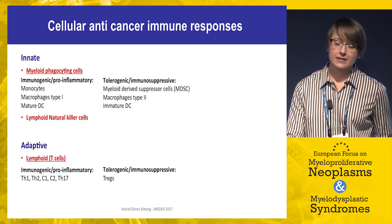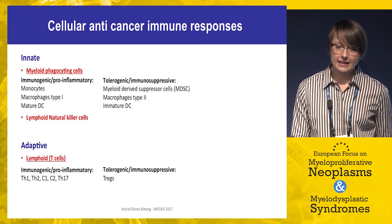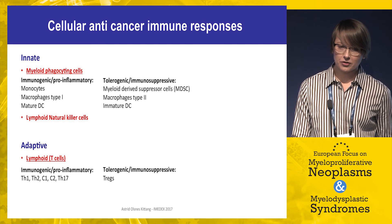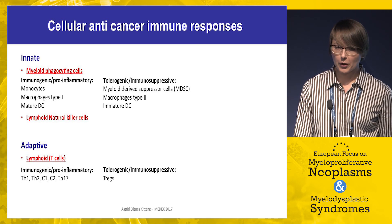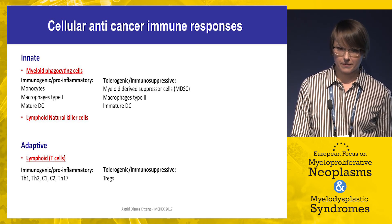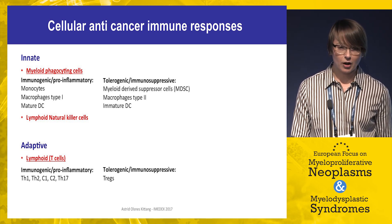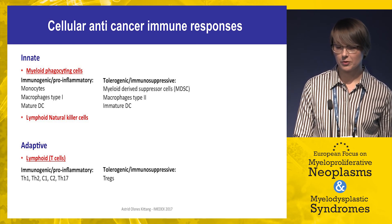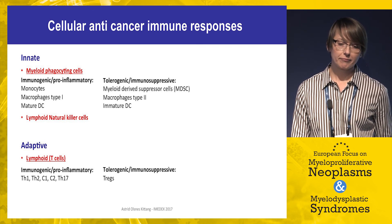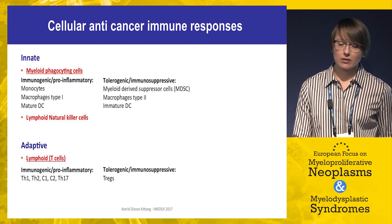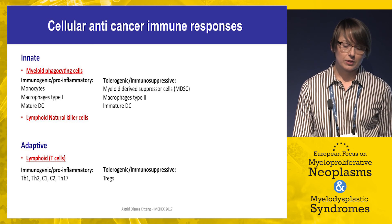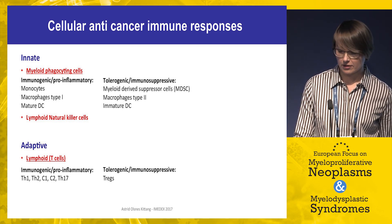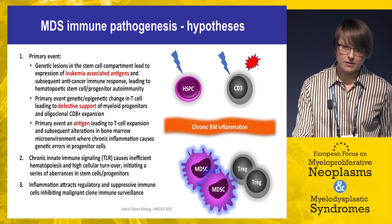The cellular anti-cancer immune system is divided into innate and adaptive components. The innate system consists of myeloid phagocytic cells and lymphoid natural killer cells. Myeloid cells can be divided into pro-inflammatory — monocytes, macrophages type 1, and mature dendritic cells — versus immunosuppressive ones, including myeloid-derived suppressor cells, macrophages type 2, and immature dendritic cells. The adaptive anti-cancer immune response is based on T cells, divided into pro-inflammatory T helper 1, 2, cytotoxic T cells, and T helper 17, with regulatory T cells being the immunosuppressive component.